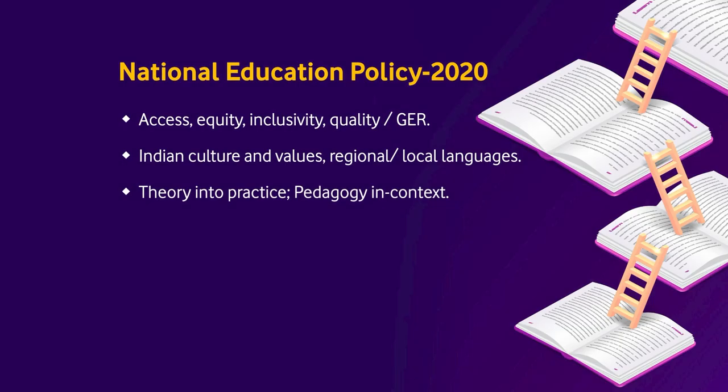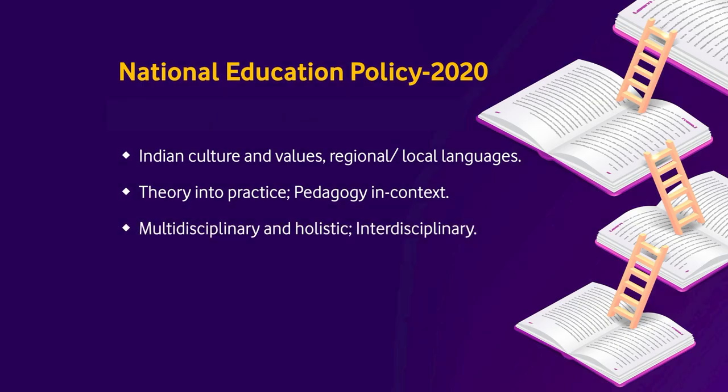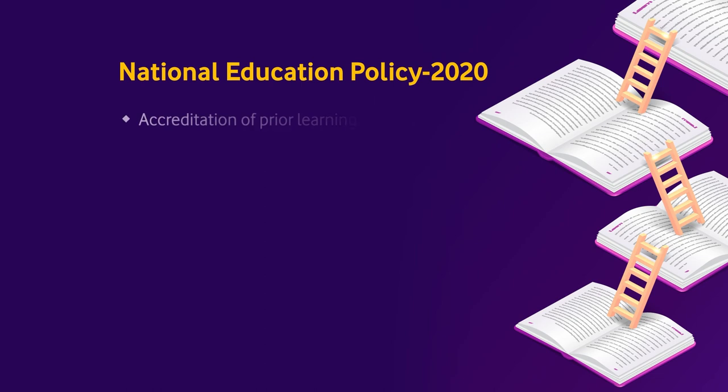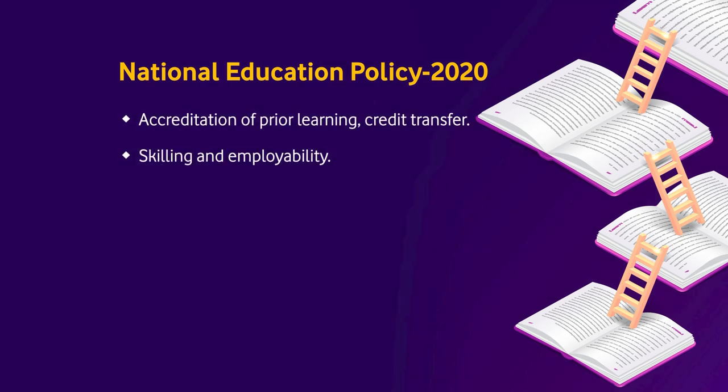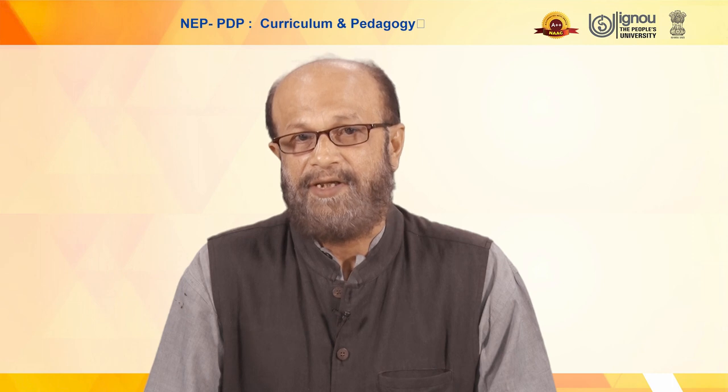It talks about pedagogy in context, putting theory into practice — almost a 50-50 formulation where 50% should be directed towards internship, activities, student engagement, and practicum. It also covers multidisciplinary, holistic, and interdisciplinary approaches. The UGC already has an outcome-based learning framework and graduate attributes. Accreditation and applied learning for skill development, and transferring credits for skills with evidence towards certificates, diplomas, or degrees is a key focus. Skilling and employability is a major issue integral to the teaching-learning process in NEP 2020.